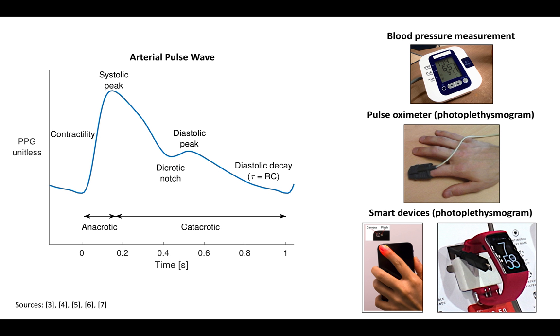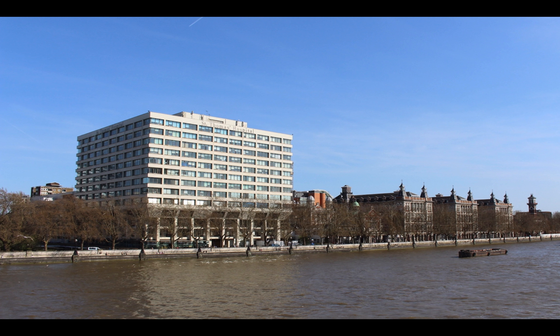If algorithms could be developed to extract such parameters reliably, then people could continuously track their own health and be prompted to make lifestyle changes. My name is Peter Charlton. I work at King's College London alongside colleagues at St Thomas' Hospital. Our work focuses on developing signal processing techniques which could then be used in the clinical setting.